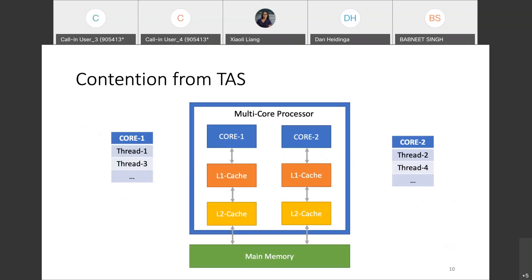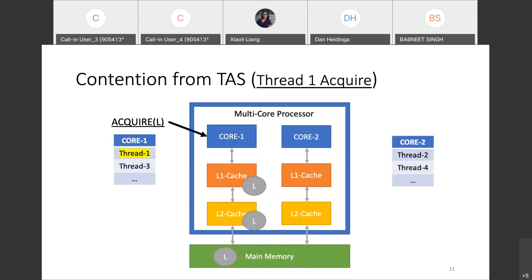Now I would like to show a simulation of how the TAS lock and caches work together. You can see a multi-core processor where each core has caches. L1 cache is smaller, faster, and closer to the core; L2 cache is bigger and further away. In this example, threads 1 and 3 are scheduled on core 1, and threads 2 and 4 are scheduled on core 2. Thread 1 wants to acquire the lock. It will get the lock's global state from main memory to L2 and then L1 cache. Since no one else owns the lock, thread 1 successfully acquires it. The lock's global state persists in one set of caches in an exclusive state, which is inexpensive to maintain.